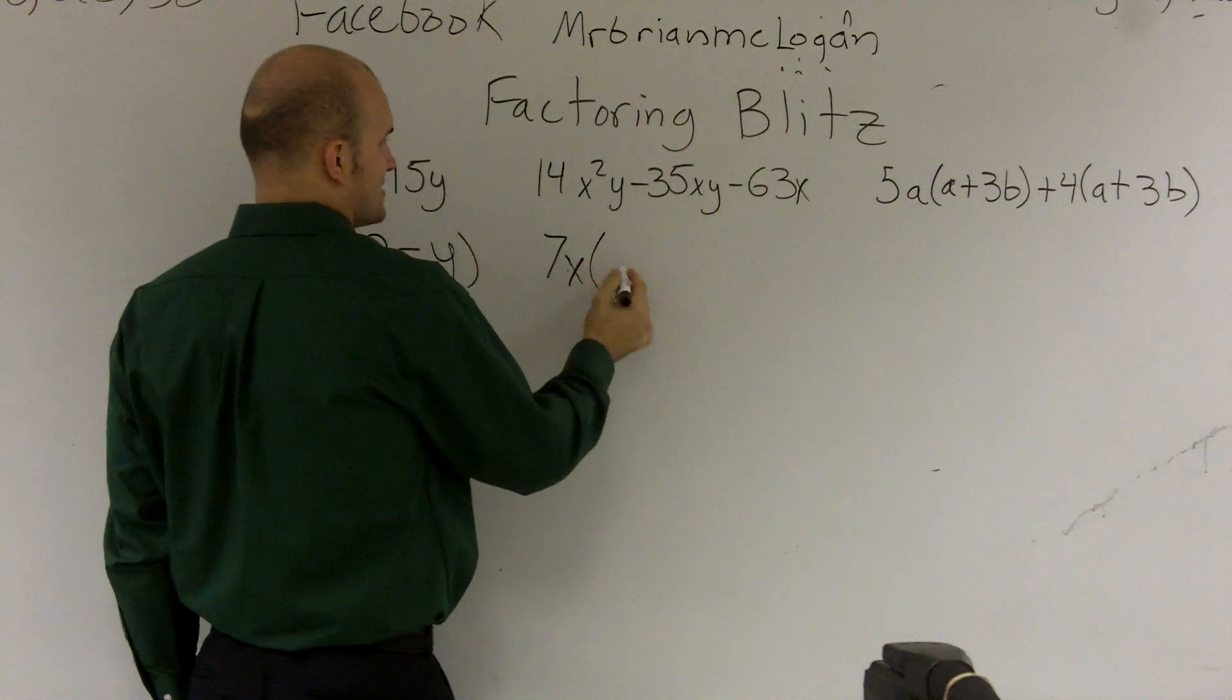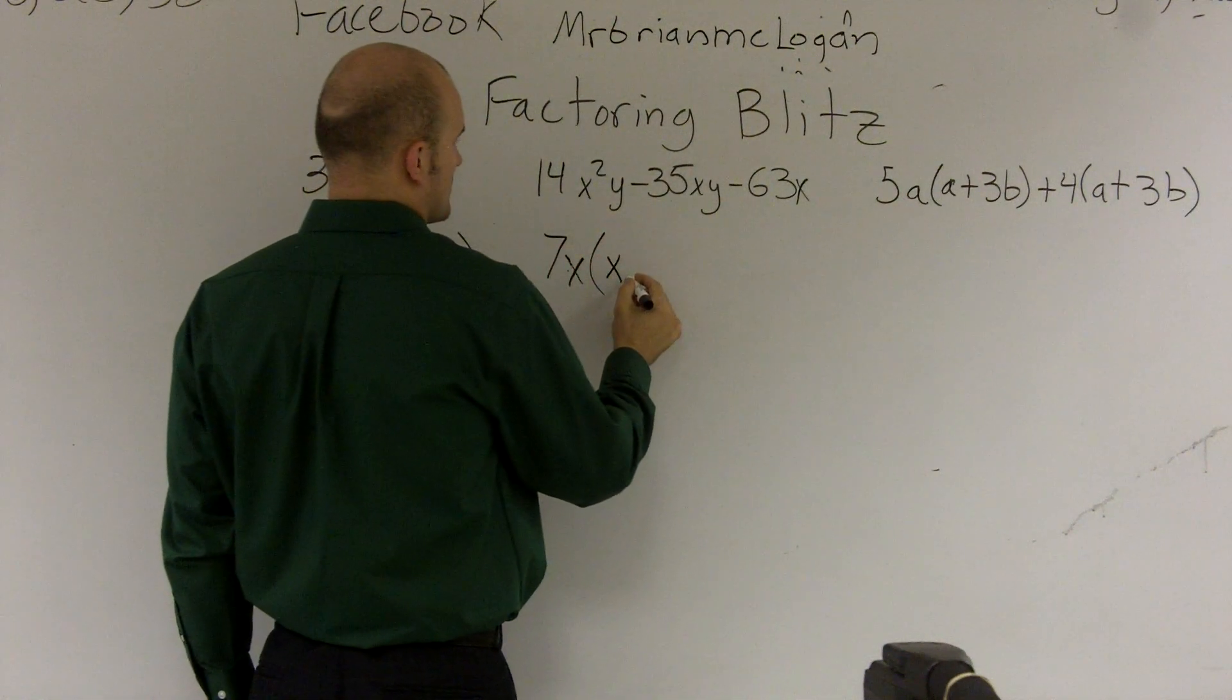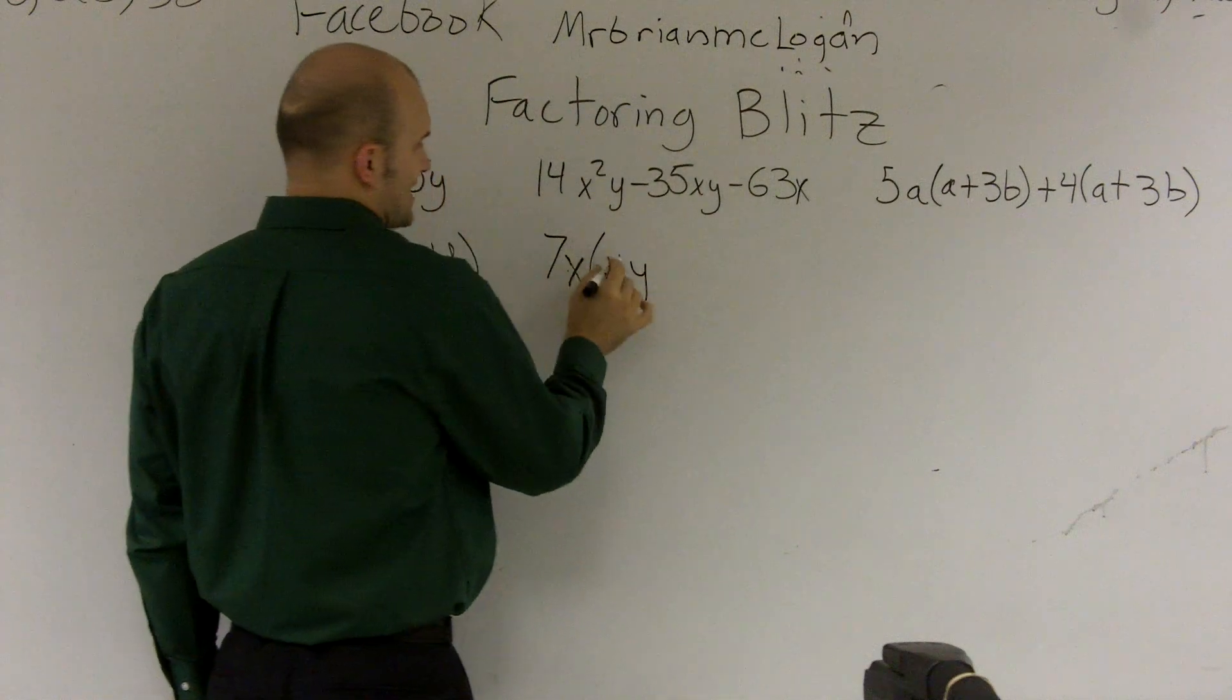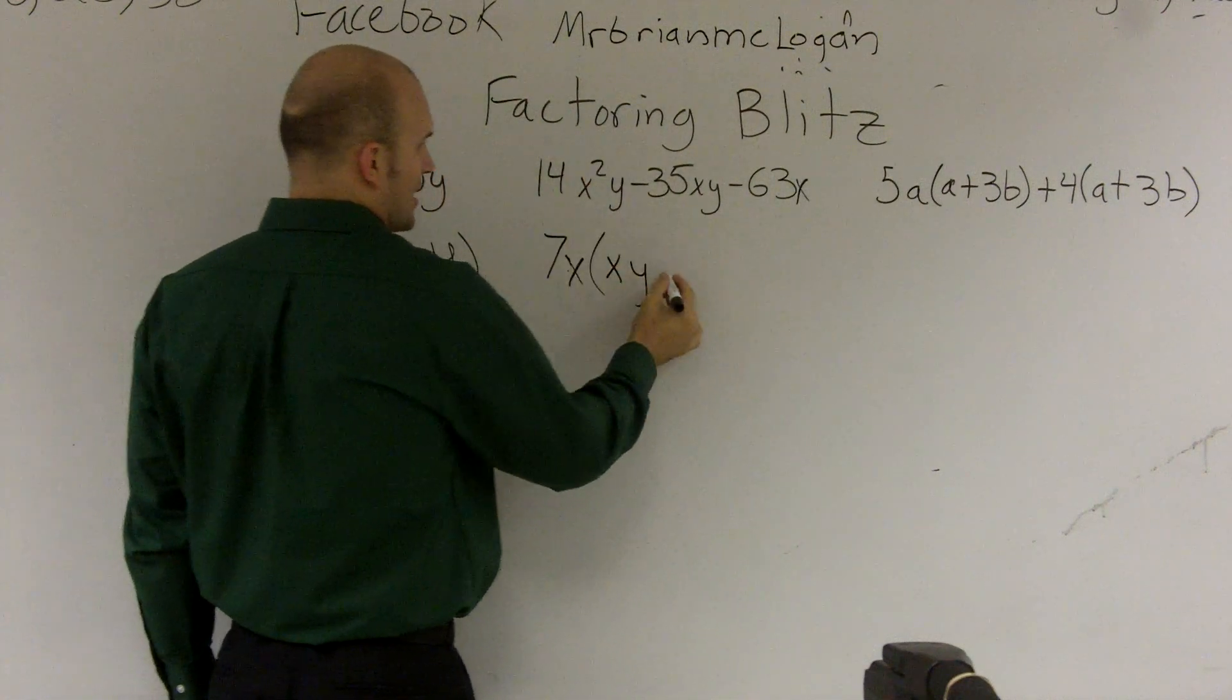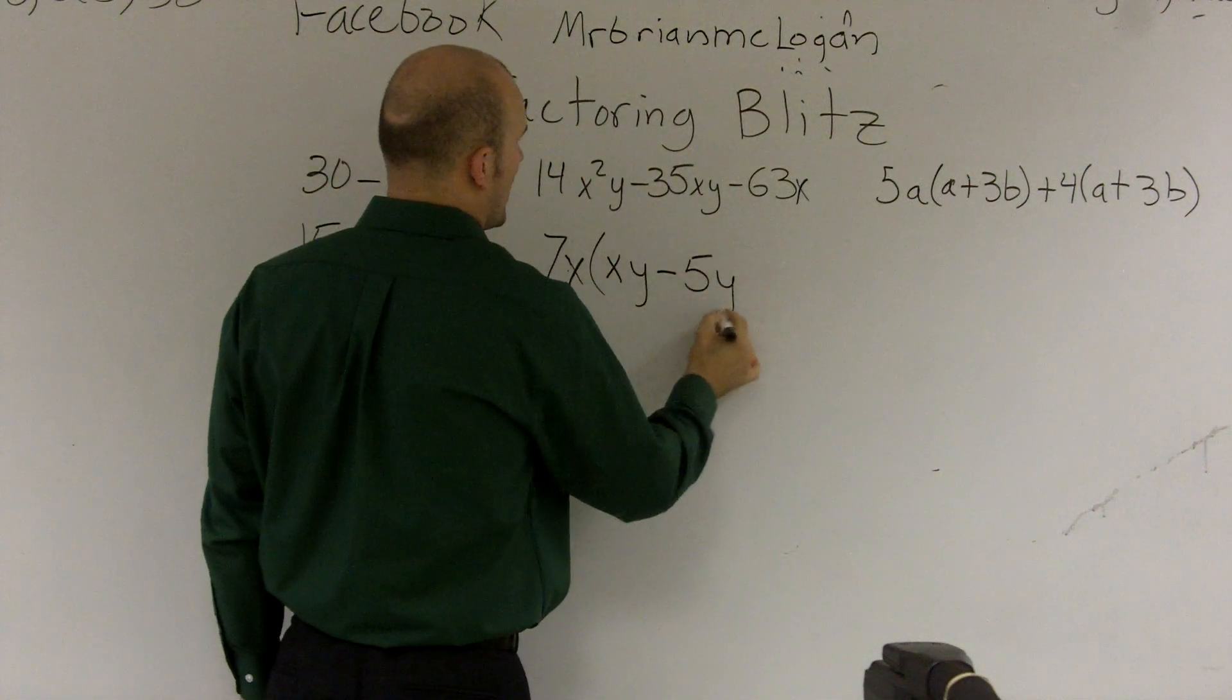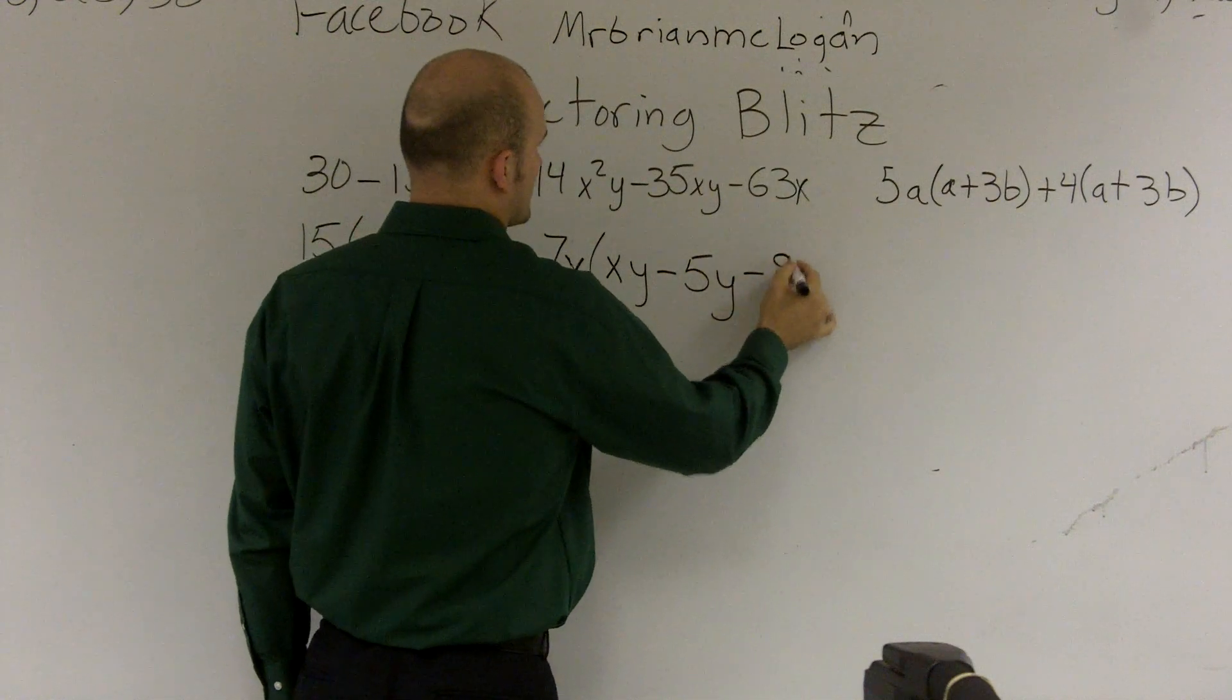So when I factor this out, 7x is going to leave me with xy, because x times x equals x squared, left of the y, minus 5y minus 9.